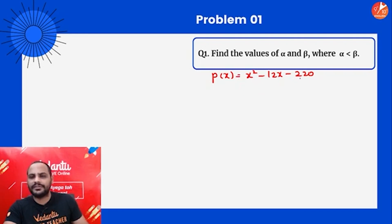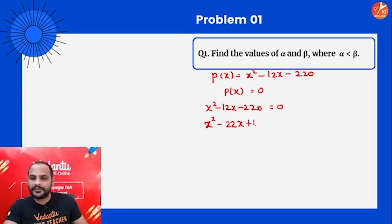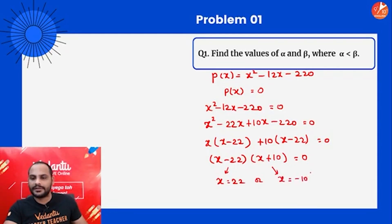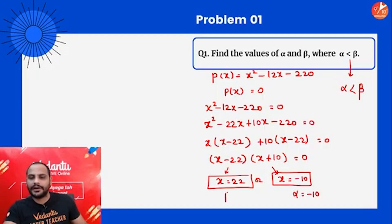To find the zeros, we make the polynomial equal to zero: x² - 12x - 220 = 0. We need two numbers whose addition is -12 and multiplication is -220 — that's 22 and -10. So: x² - 22x + 10x - 220 = 0, giving (x - 22)(x + 10) = 0. Therefore x = 22 or x = -10. Since alpha < beta, alpha = -10 and beta = 22.